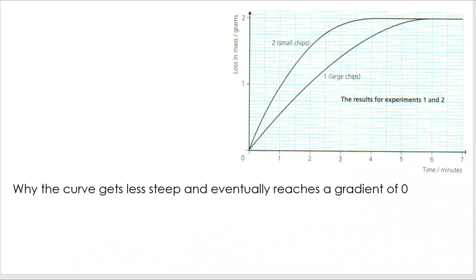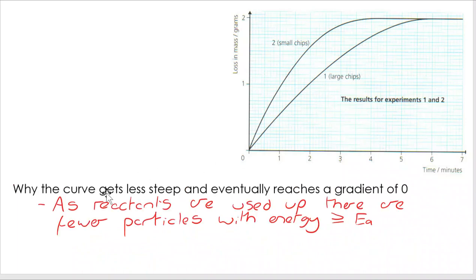Why does the curve get less steep and eventually reach a gradient of zero? So on this one, as the reactants are used up, we have fewer particles left to react. And that means we have fewer with energy equal to or greater than the activation energy. And that therefore means there's fewer successful collisions, so the rate will slow down.